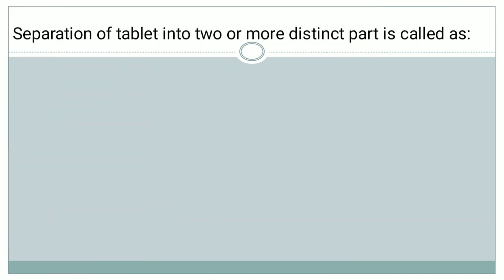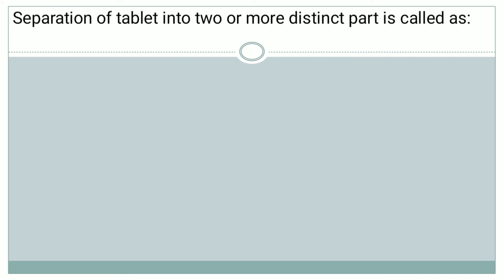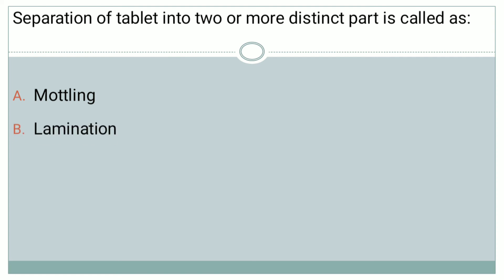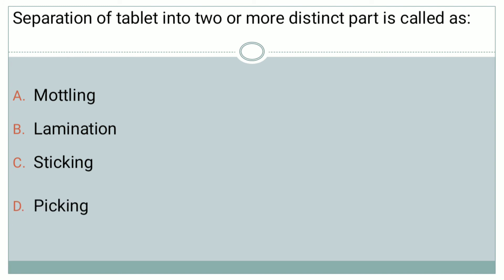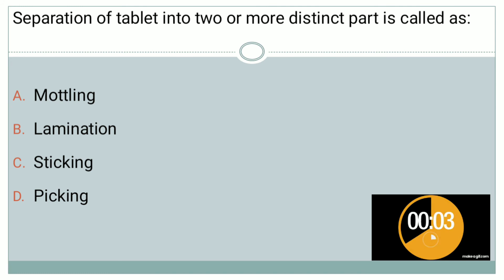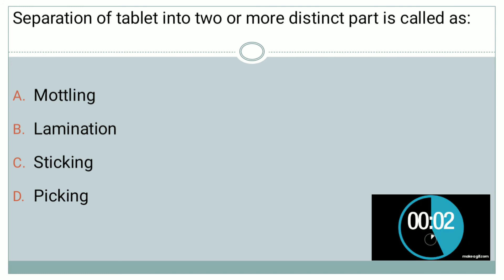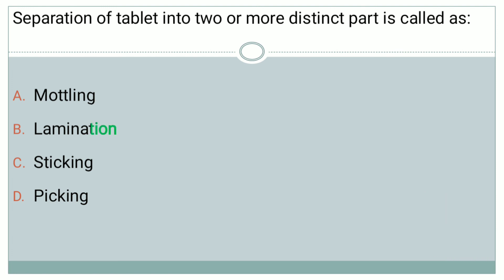Next question: separation of a tablet into two or more distinct parts is known as — options are: A — mottling, B — lamination, C — sticking, and D — picking. The correct answer is option B — lamination.